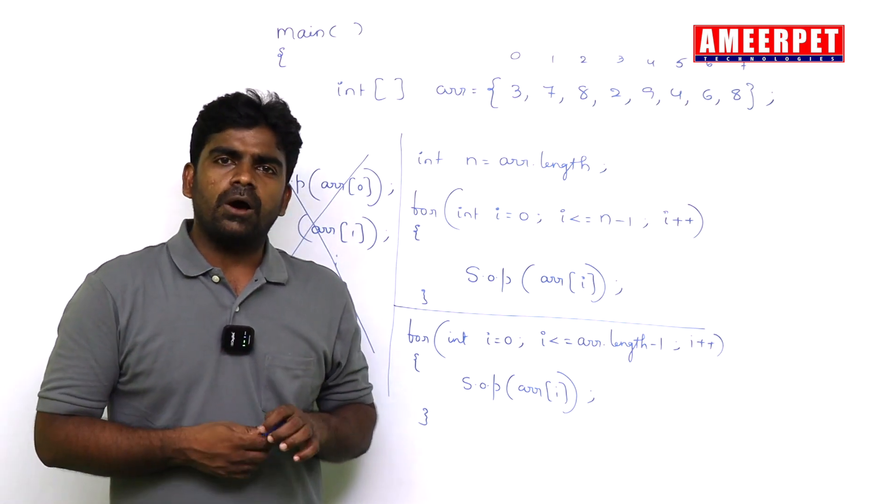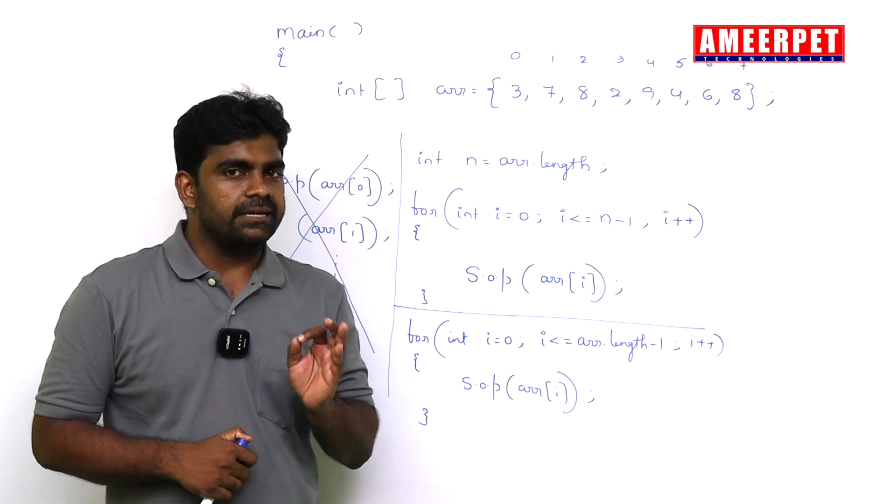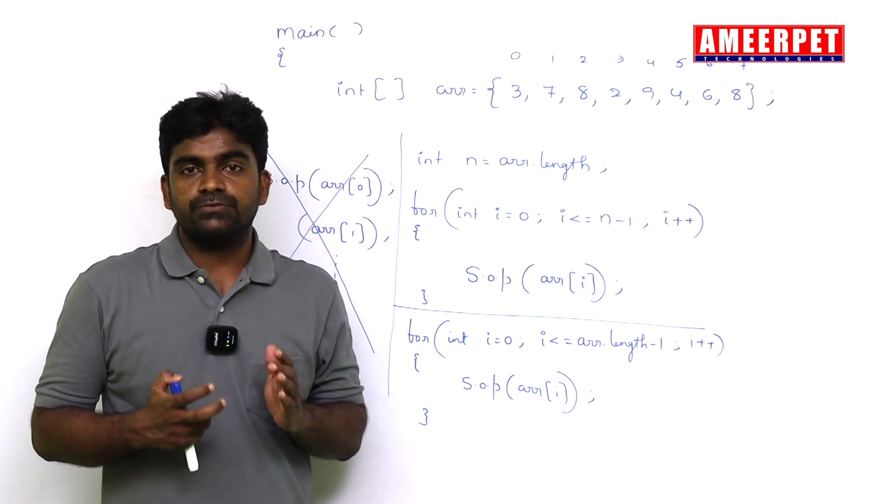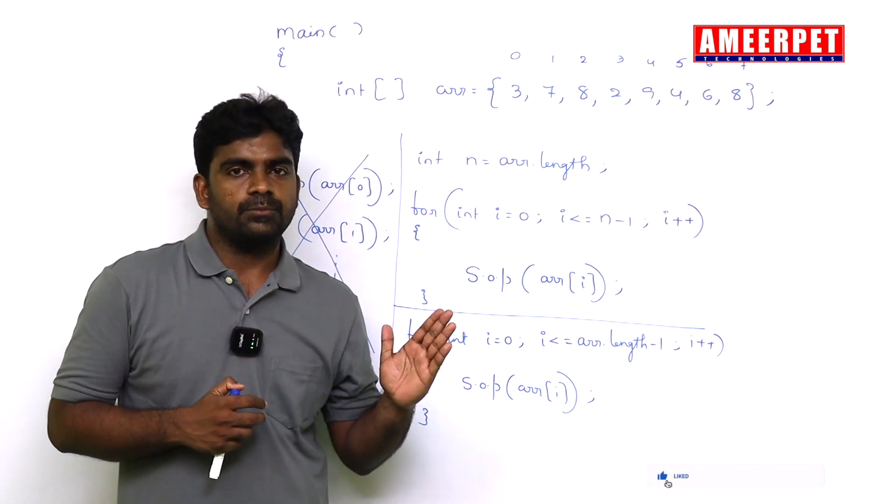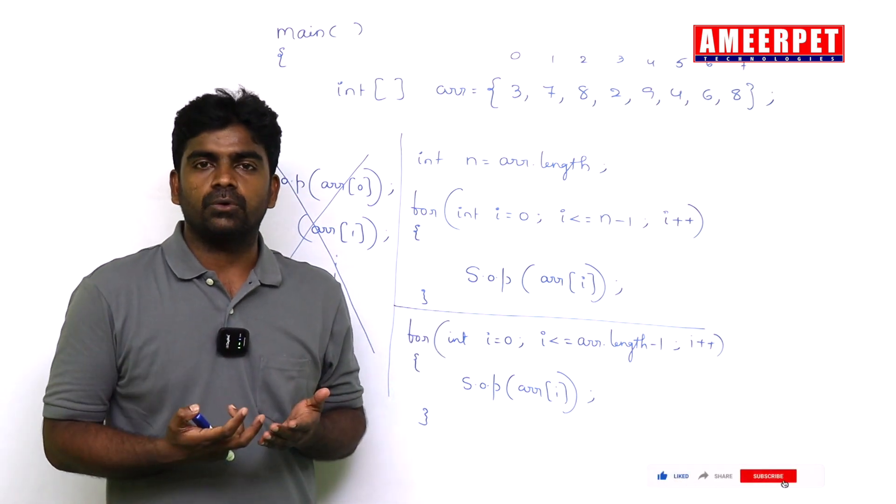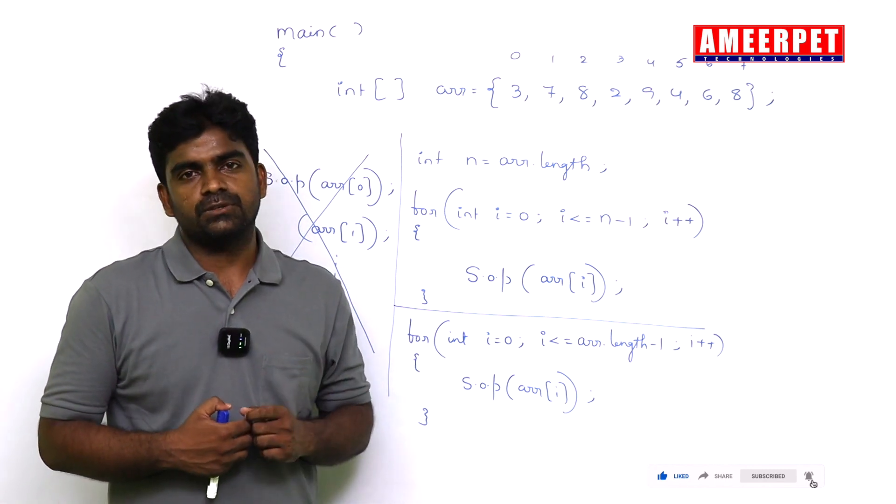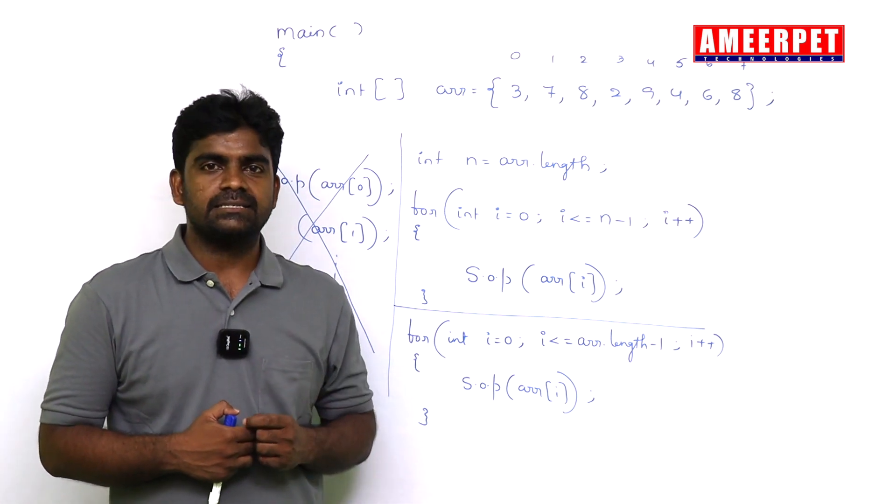So remember, whenever you want to display all elements of array, it is recommended to use the loop. So why you choose for loop? Because we know the length, what is the starting point and what is the ending point. That's why we always use for loop to process the elements of array. Hope you understood guys, thank you.